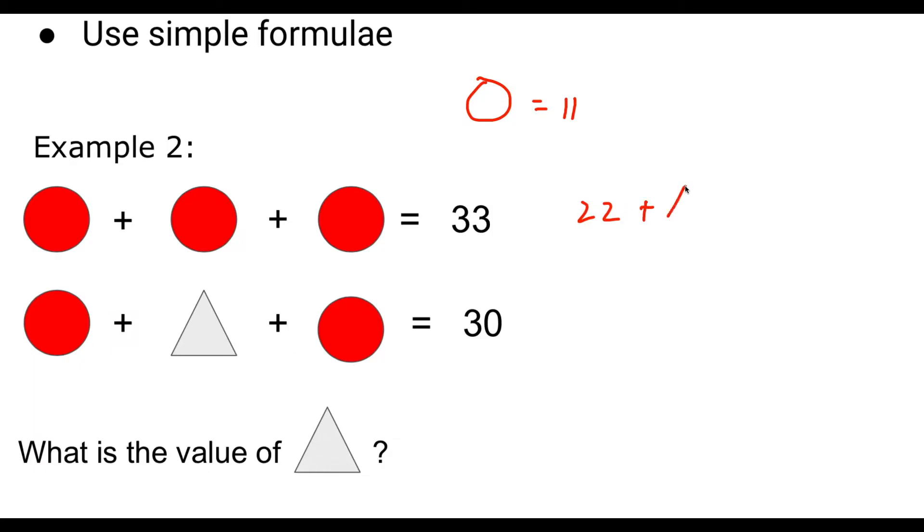So if we have 22 plus a triangle, which we don't know the value of yet, equals 30. So all we need to do now is say, what do I need to add on to 22 to make 30? And the answer would be 8. So the triangle is worth 8. That's the value. What I always recommend doing is, if you're sure you've got the answer, put it back into the equation. 11 plus 8, which is 19, plus 11 again. Does it equal 30? Yes, it does. 19 plus 11 equals 30. So we know we've got our answers right for that.